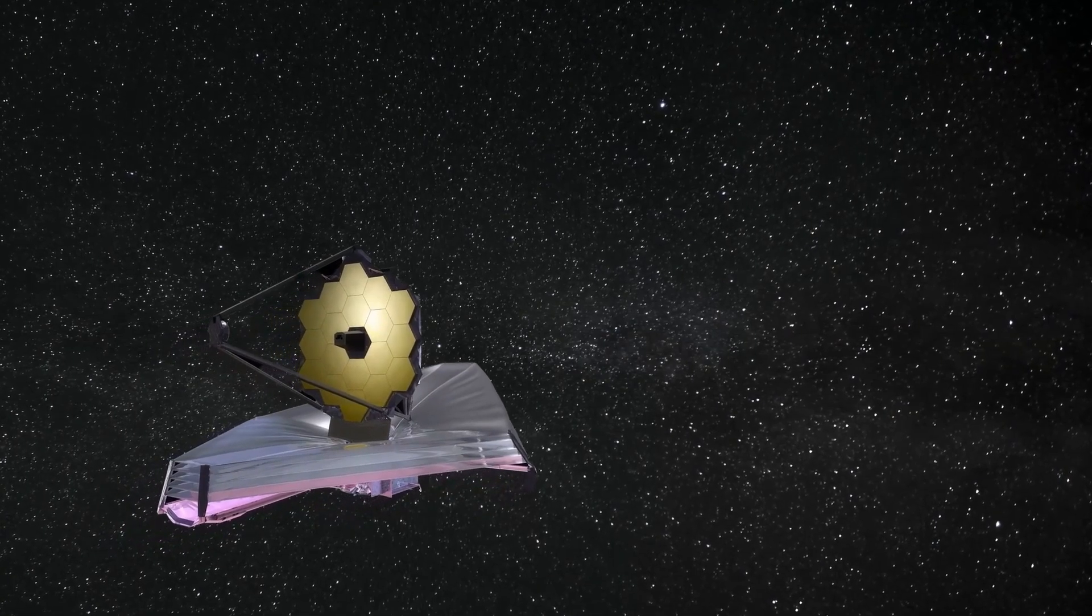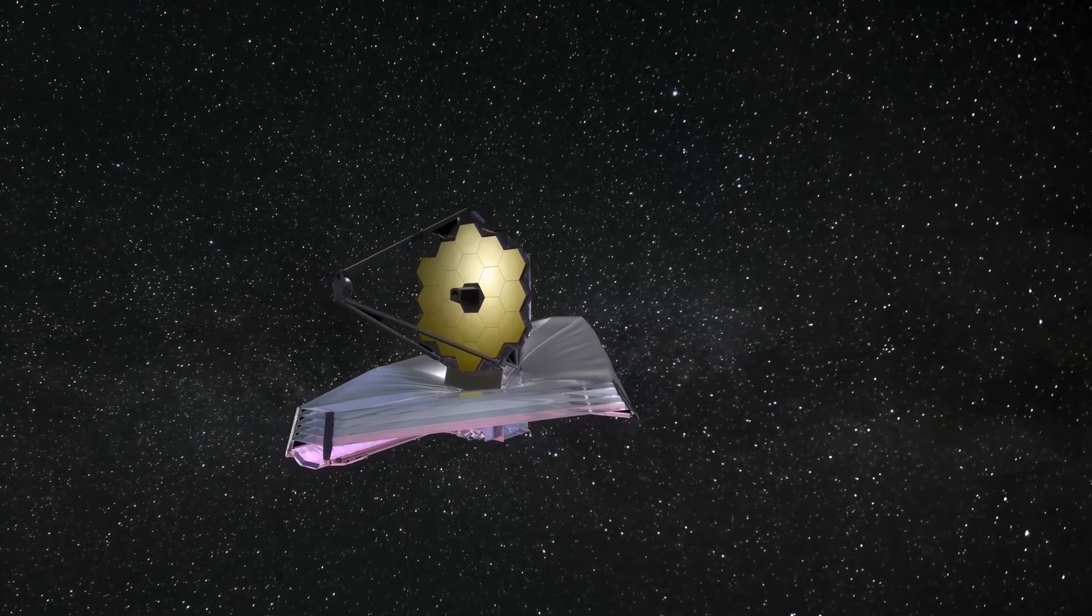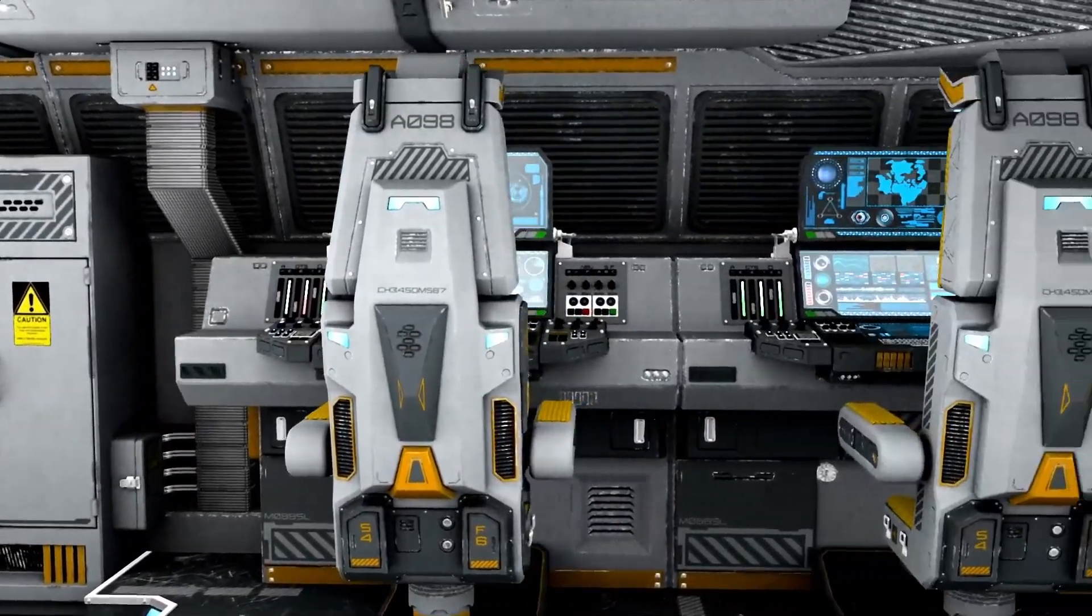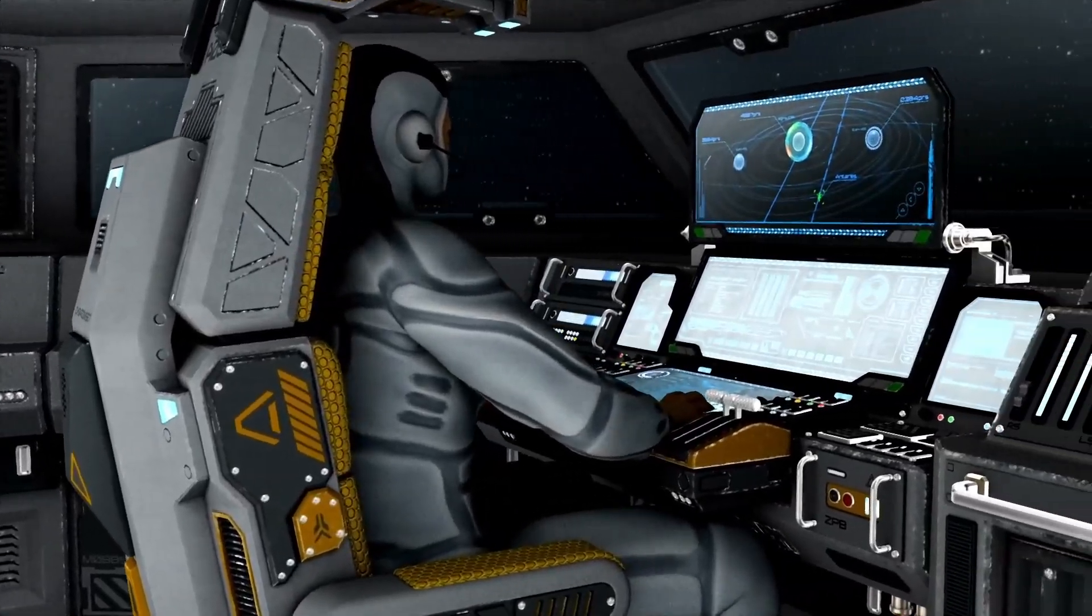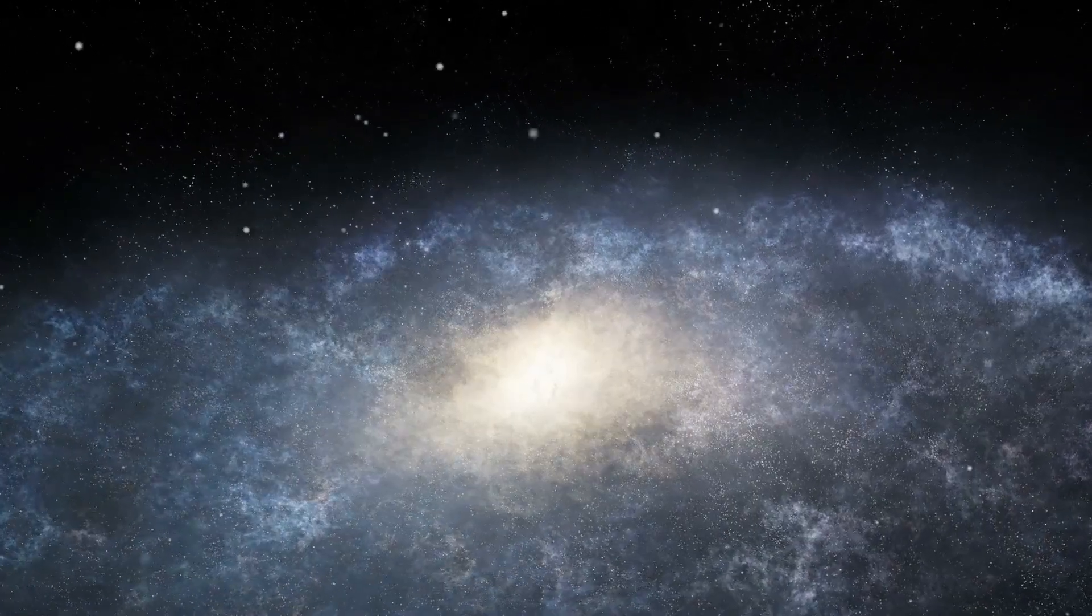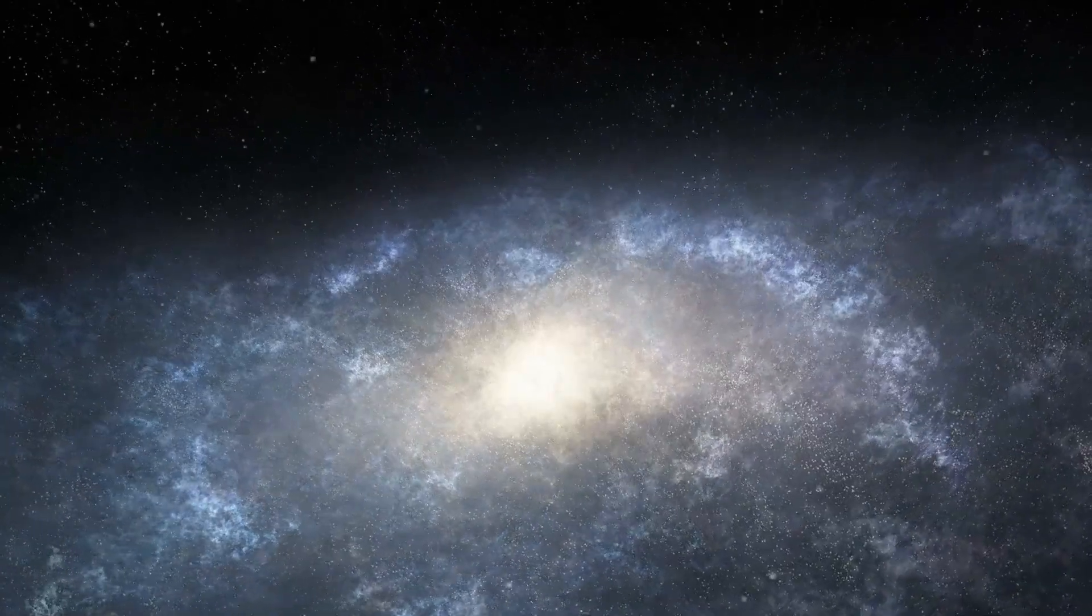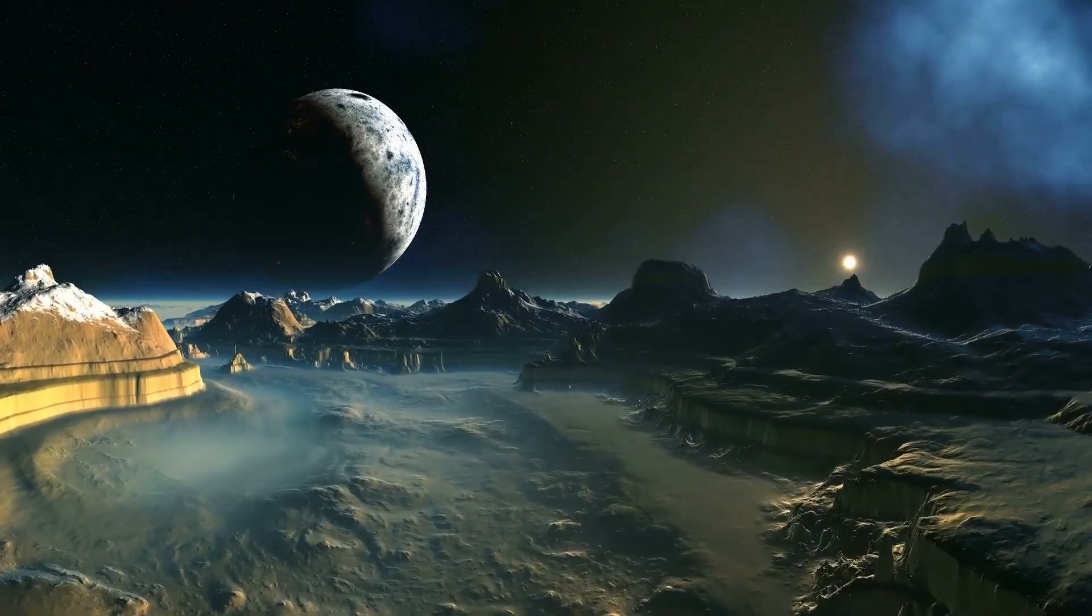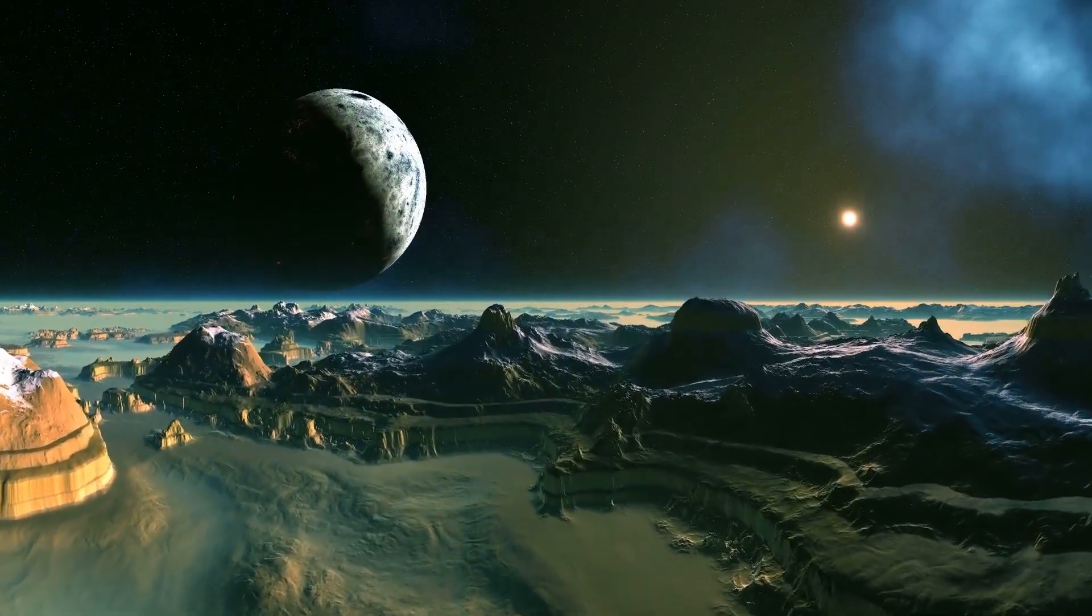This is why analogies with Rosetta matter for 3I Atlas. When a comet rounds the sun during a period of solar fireworks, the plasma and magnetic effects can dwarf anything caused by dust and gas alone. The numbers from Rosetta set the scale for what scientists are now watching for in the data from 3I Atlas as it emerges from its own solar encounter.